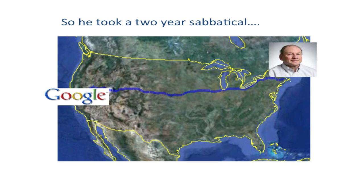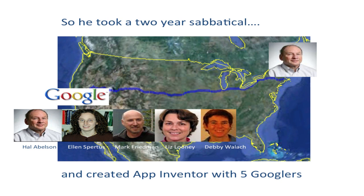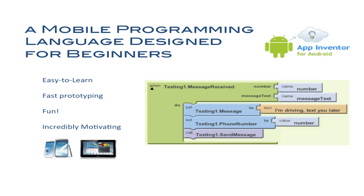Hal took a two-year sabbatical at Google, went cross-country, and teamed up with a great team of engineers at Google. What they did was create a language called App Inventor. The idea is that it's designed specifically for beginners — great engineers targeting and focusing on beginning programmers, building this library to be used by beginners.